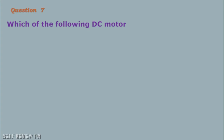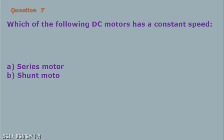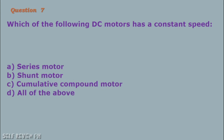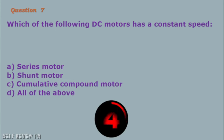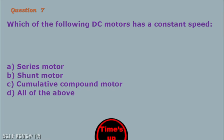Question number 7: Which of the following DC motors has a constant speed? A. Series motor B. Shunt motor C. Cumulative compound motor D. All of the above. The correct answer is letter B, shunt motor.